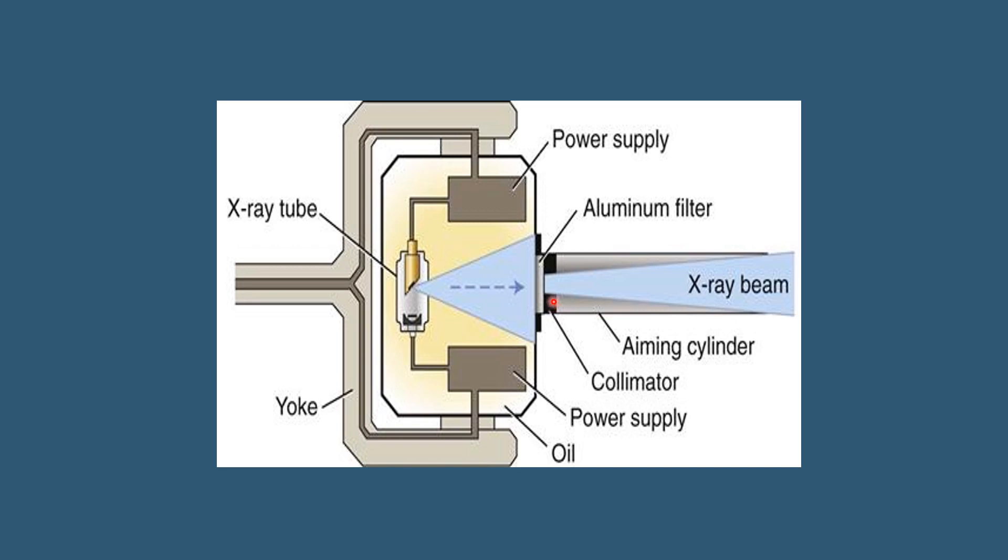As we can see in this diagram, these are the collimators and this is the window between the collimator. The purpose of collimator is to maintain the size and the shape of X-ray beam which is passing through it.